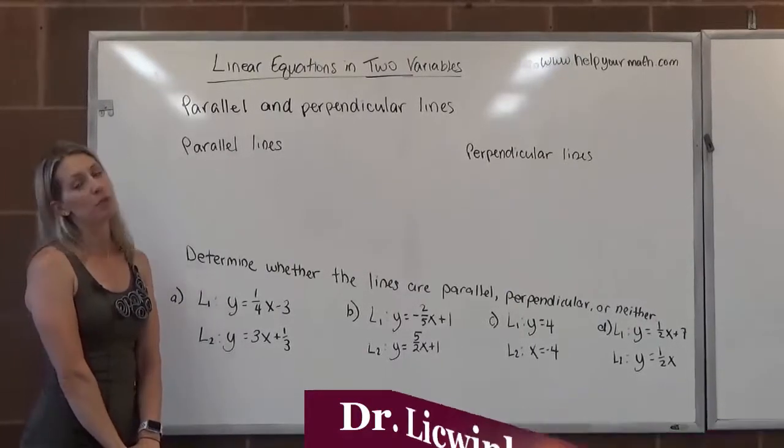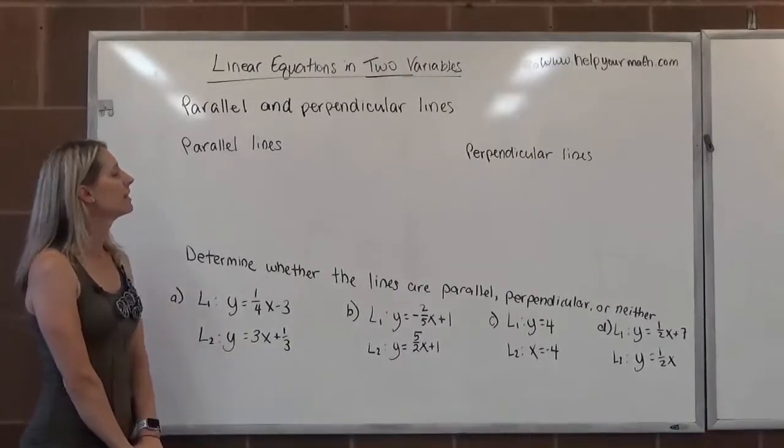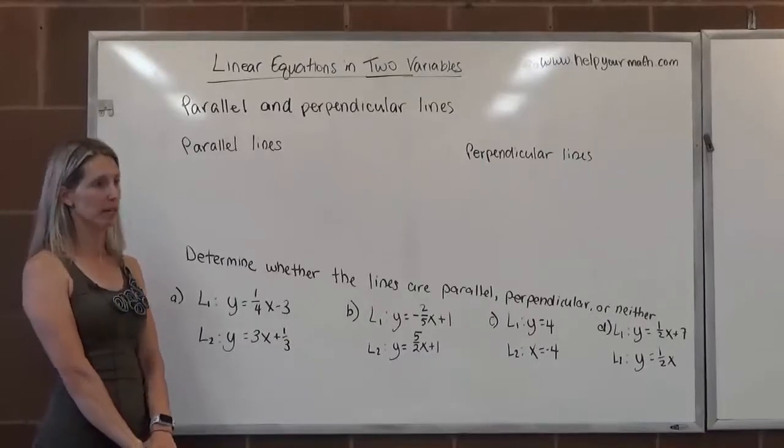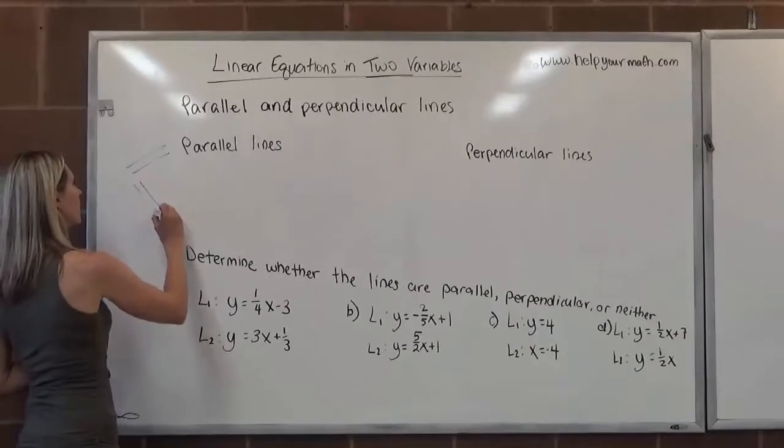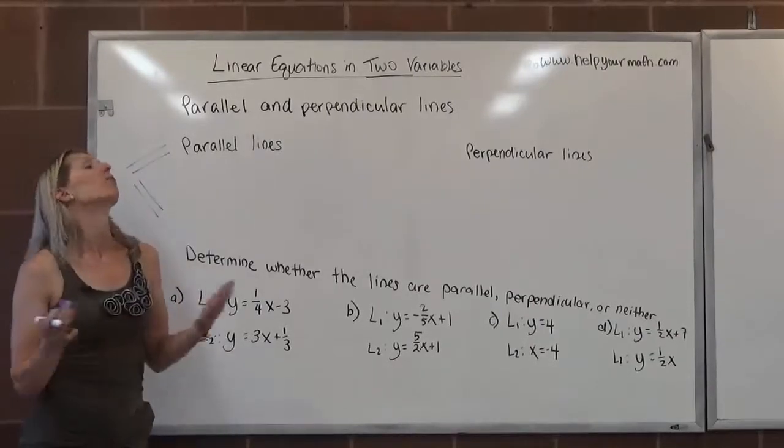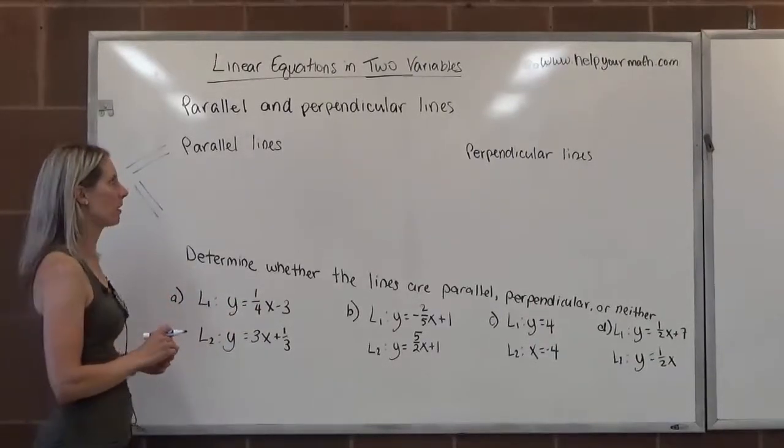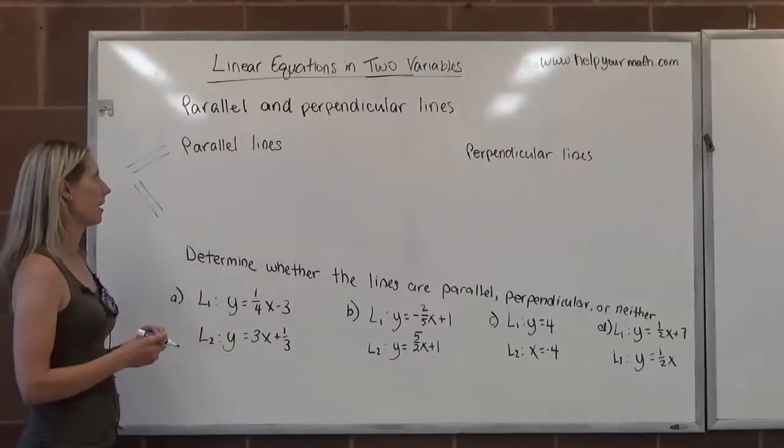So first, we'll start with parallel lines. What are parallel lines? Well, in Euclidean geometry, they are two lines that never cross in the coordinate plane. So they might look something like this, or they could look like this. Those would be indications of parallel lines.